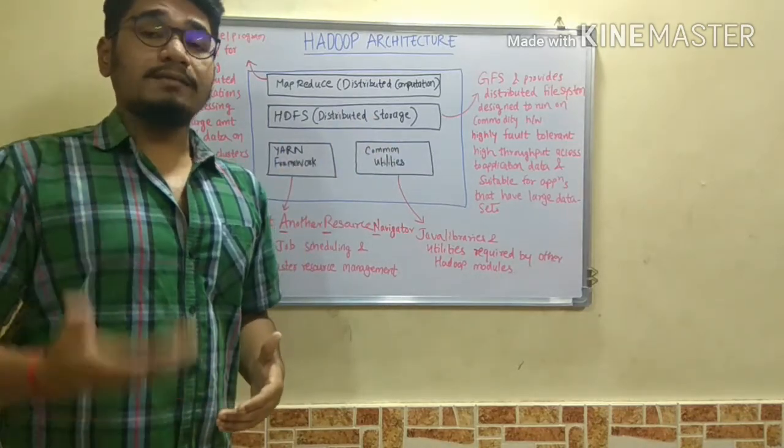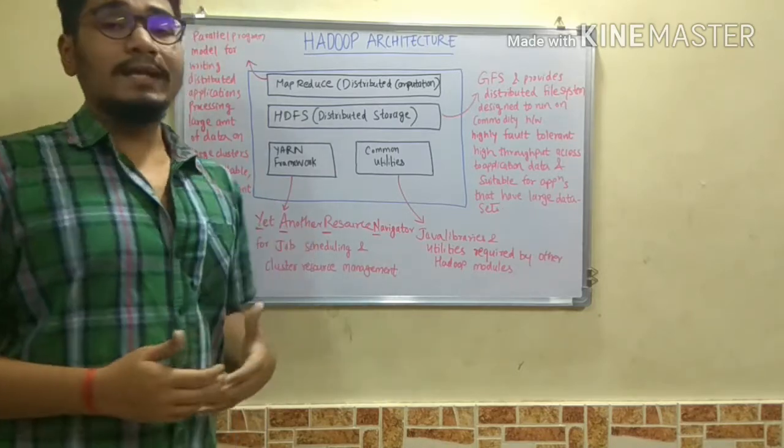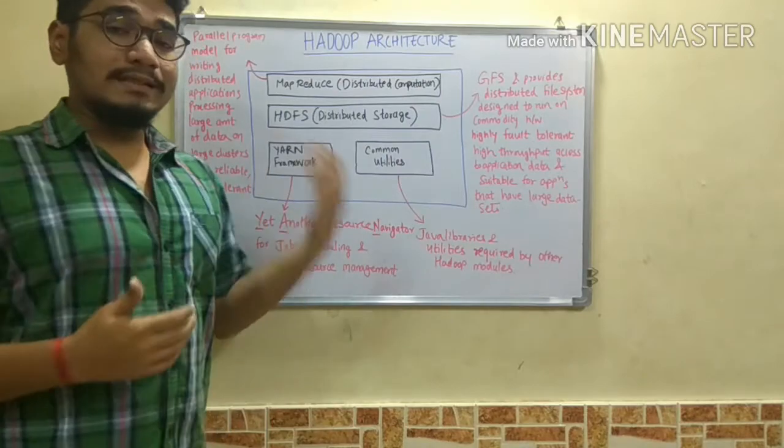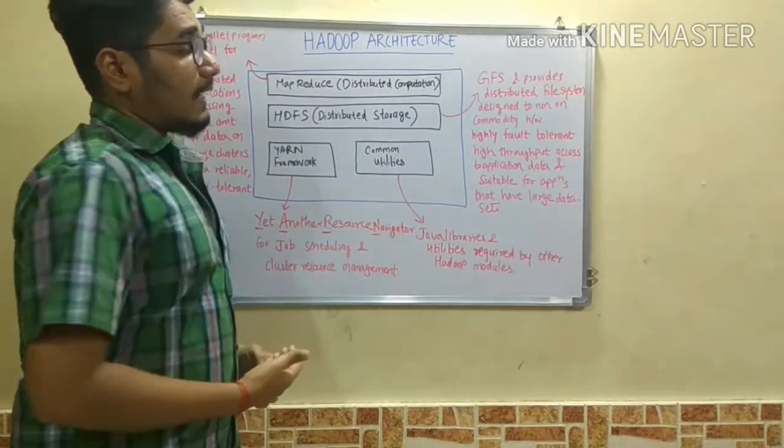the smartphones or the desktops or laptops that you use at your home. That comes under commodity hardware. This also runs in a highly fault-tolerant manner and has high throughput access to application data.